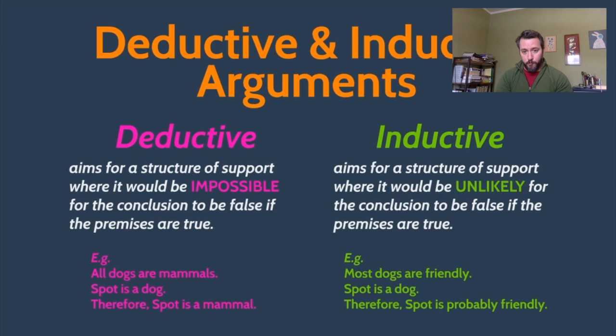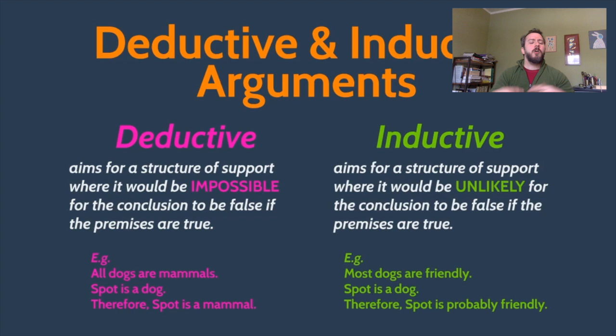For example, consider: All dogs are mammals. Spot is a dog. Therefore, Spot is a mammal. If it's true that all dogs are mammals, and it's also true that Spot is a dog, then it has to be the case that Spot is a mammal. There's no way to agree with those premises and deny the conclusion without contradicting yourself, without becoming manifestly irrational.